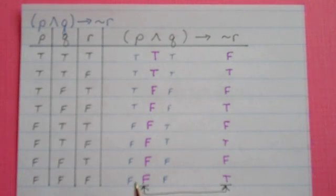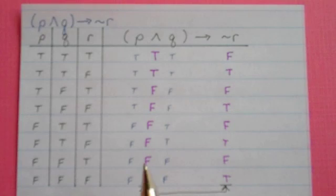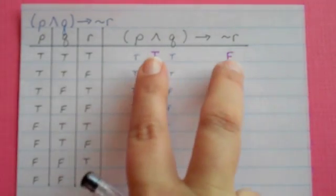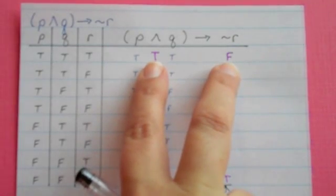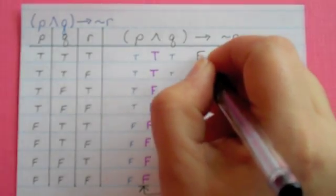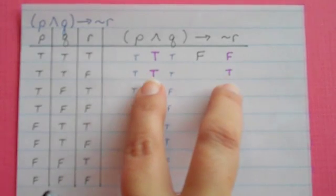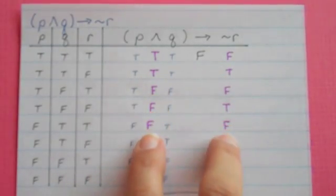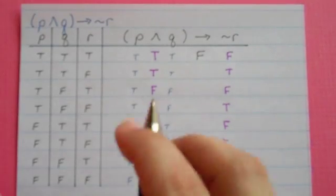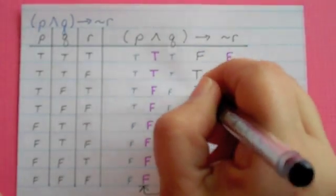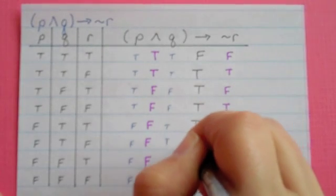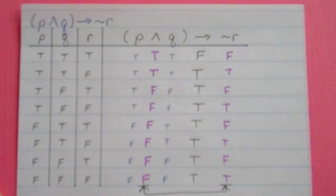Now I've got my column — the answer to my parentheses — and my column for NOT R, and I want to put these together with a conditional. The only time it's false is when you have TRUE followed by FALSE. I'm going to look down these two columns and see when I have TRUE followed by FALSE. I've got it right there, so that one's going to be FALSE. Let's see if I have TRUE followed by FALSE anywhere else — nope, so the rest of these must be TRUE. And that's my answer.